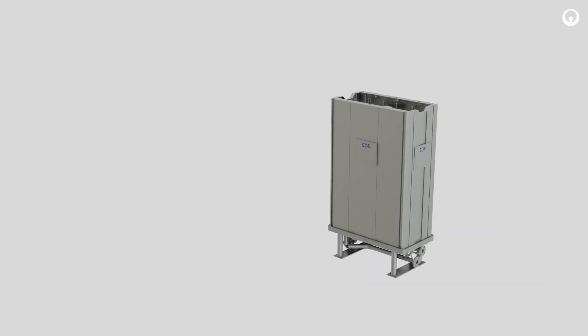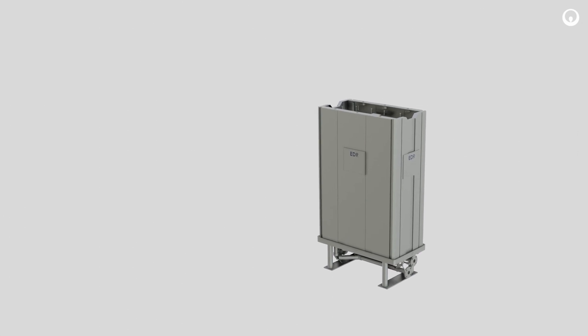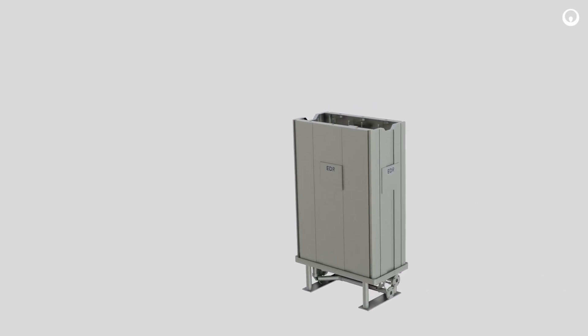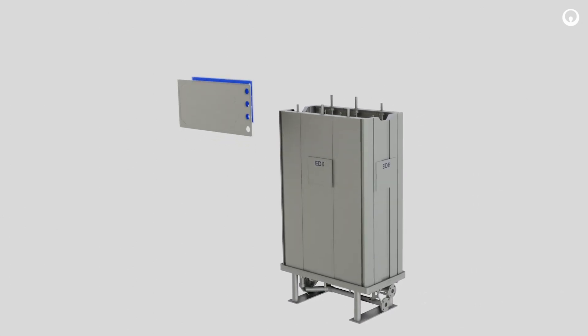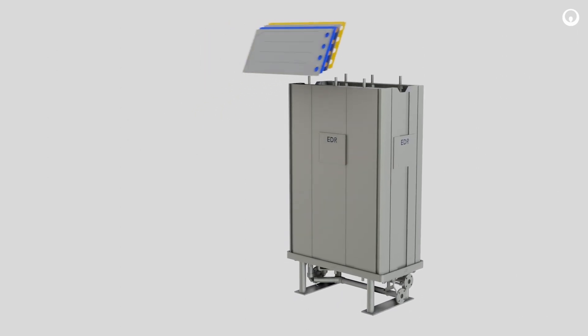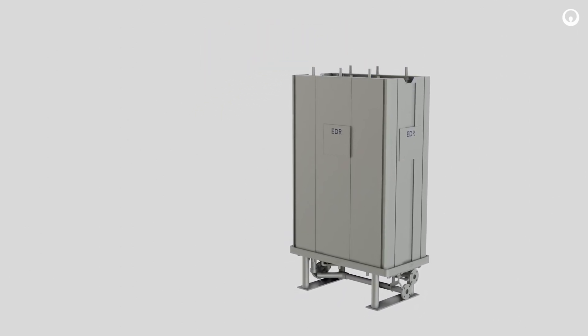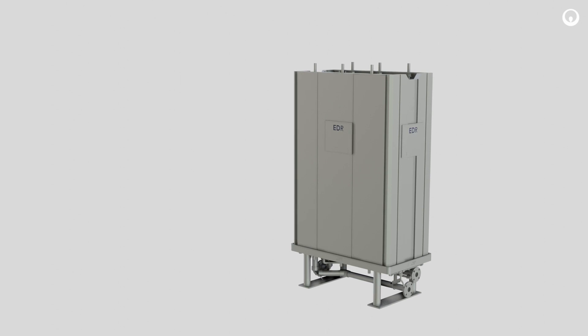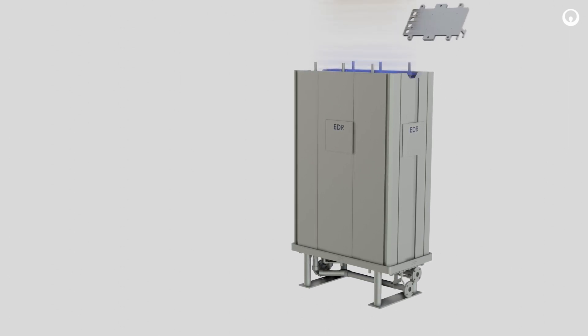An electrodialysis stack consists of many cells of membranes and spacers placed between two electrodes. One of each type of membrane and one spacer for each stream are placed together in a cell pair, which repeats hundreds of times to build a full EDR stack.